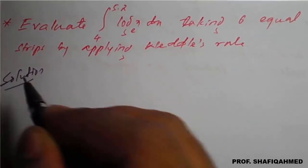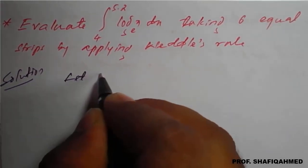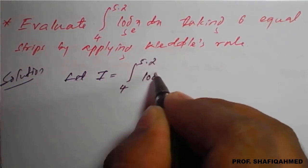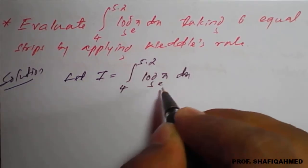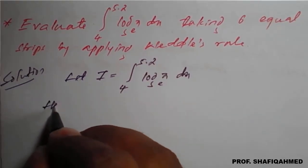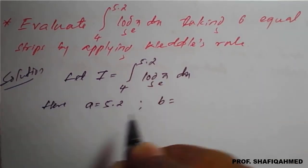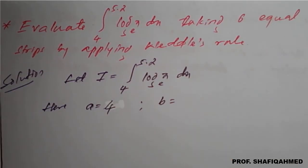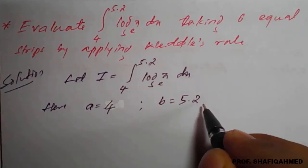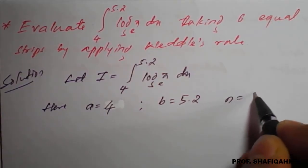Here, let I equal the integration from 4 to 5.2 of log x to base e dx. If you write only log x, it's understood to be base e. The value of a is 4, b is 5.2, and they have given 6 equal strips, meaning n equals 6.